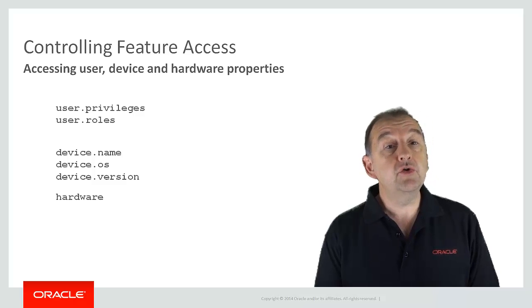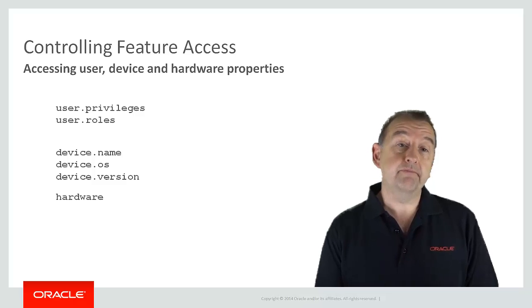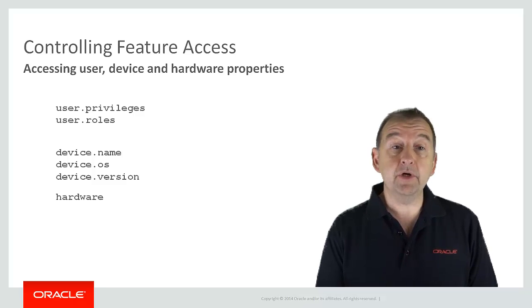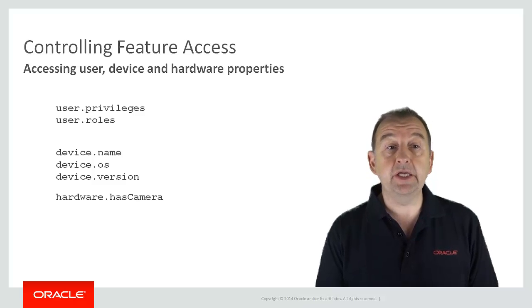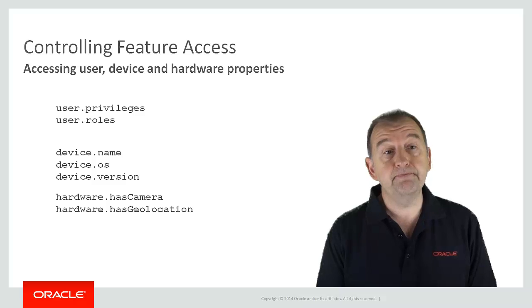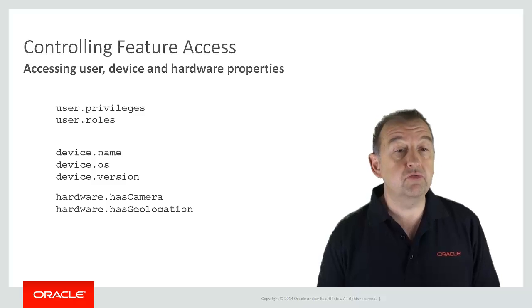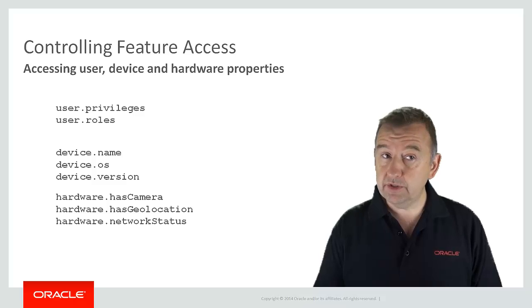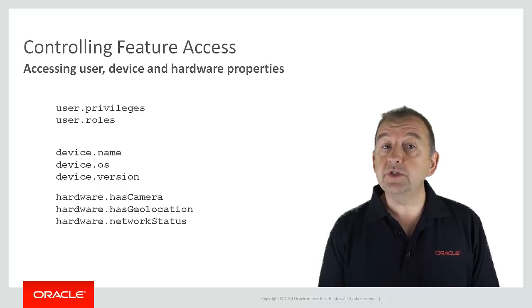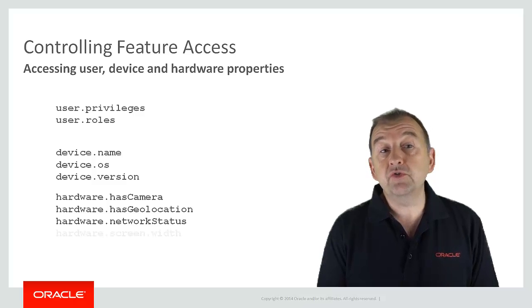You can also interrogate hardware properties. If you want to check, for example, whether the hardware has a camera, you reference hardware.hasCamera. If you want to know if the application can access geolocation information, then you use hardware.hasGeolocation. To know the status of your network connection — for example, before trying to write information back to a remote service — you would check hardware.networkStatus. And if you want to access properties about the physical dimensions of the screen, you can use hardware.screenWidth.